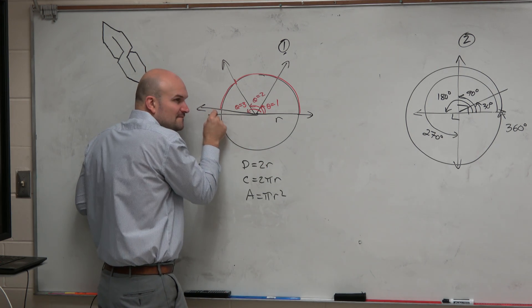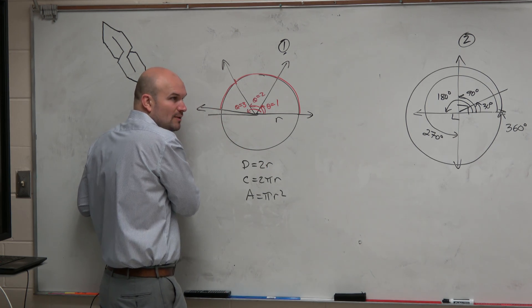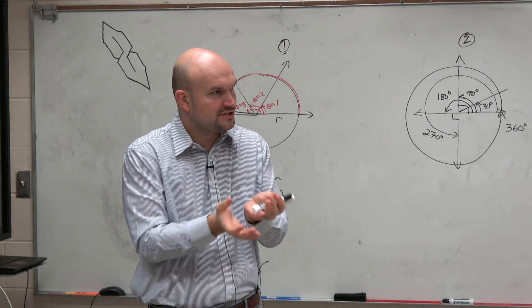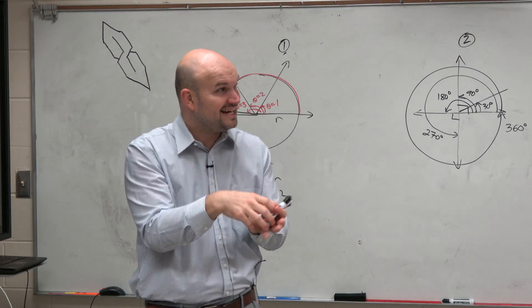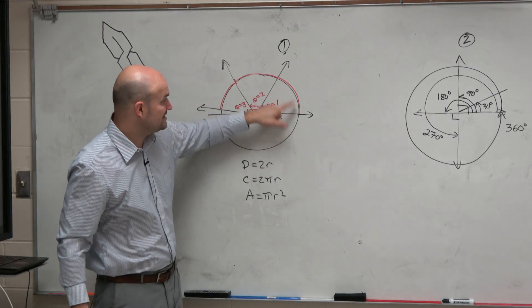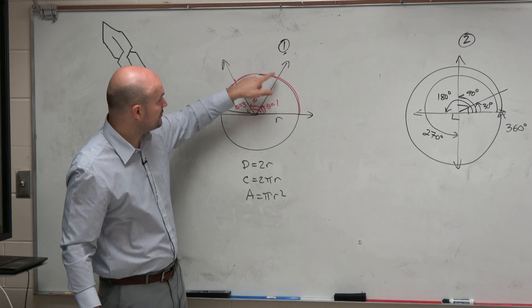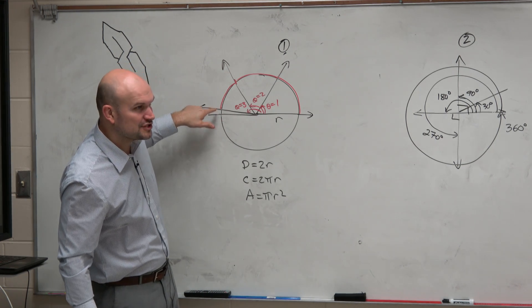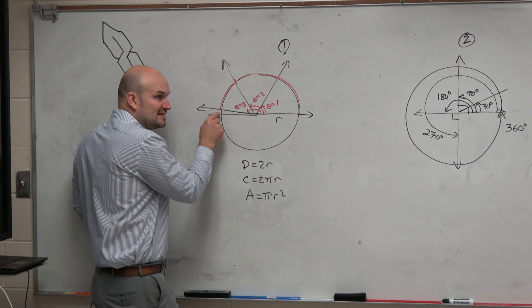But we realize there's this section here that we don't have, right? And in geometry class or in algebra 2, when we do this, I would actually give students a string so they can see that it does fall short. It doesn't work. You can't grab your radiuses and get exactly three. There's this little, little, little, tiny extra bit that does not fit, right?